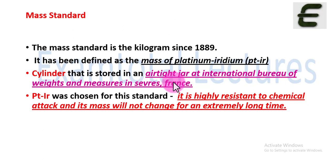Let's look at the mass standard. Since 1889, the mass standard used is the kilogram. It has been defined as the mass of platinum-iridium cylinder that is stored in an airtight jar at the International Bureau of Weights and Measures in France. Why did they choose platinum-iridium as a standard? Because it is highly resistant to chemical attack and its mass will not change for extremely long time. Platinum-iridium has no chemical reaction or radioactivity. That is why platinum-iridium has been chosen as a mass standard.